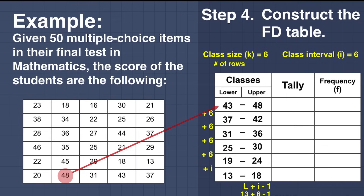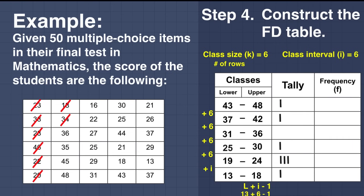Now let us do the tally. Score 23 falls in class 19 to 24 — count 1. Score 38 falls in 37 to 42 — count 1. Score 28 falls in 25 to 30 — count 1. Score 46 falls in 43 to 48 — count 1. Score 22 falls in 19 to 24 — count 2. Score 20 falls in 19 to 24 — count 3. Score 18 falls in 13 to 18 — count 1. Score 34 falls in 31 to 36 — count 1. Score 36 falls in 31 to 36 — count 2.